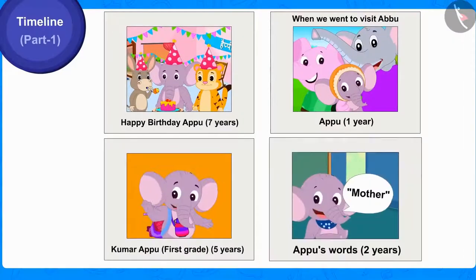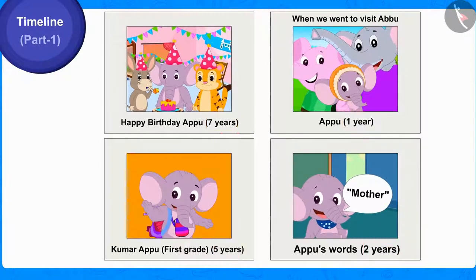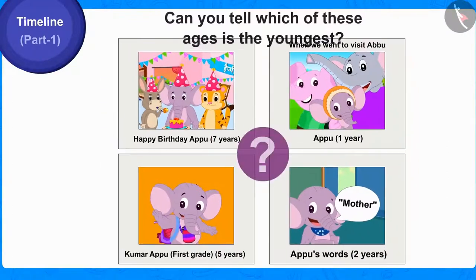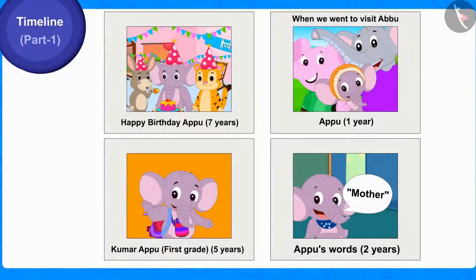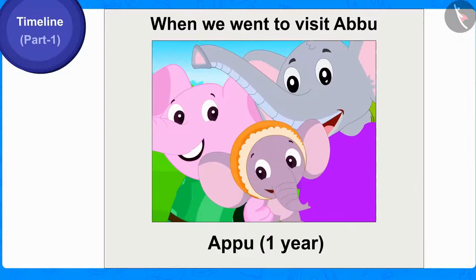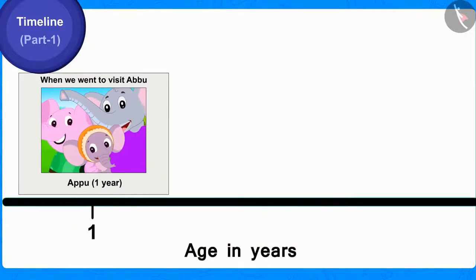Children, here we have four pictures of Appu and his age in those pictures. Can you tell which of these ages is the youngest? Correct! The picture of Appu taken when he was one year old will be shown first on the timeline by writing 'one year' on it like this.